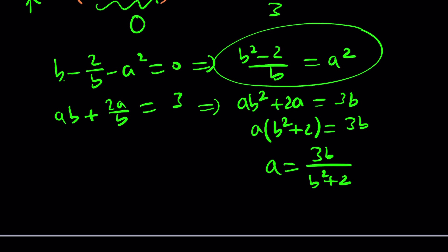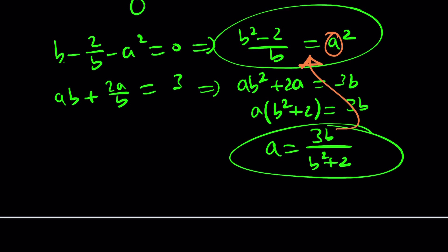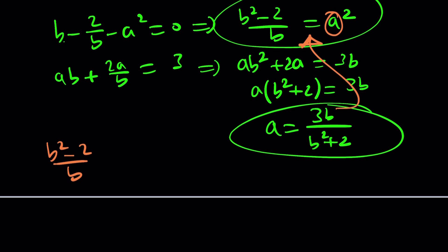You can isolate a from here and write it as 3b over b squared plus 2. So, we have two equations and two unknowns. So, we should be able to solve it. Well, yes and no. One thing you can do is replace this a here with this. So, that gives you b squared minus 2 all over b equals a squared, which is 3b divided by b squared plus 2 quantity squared.